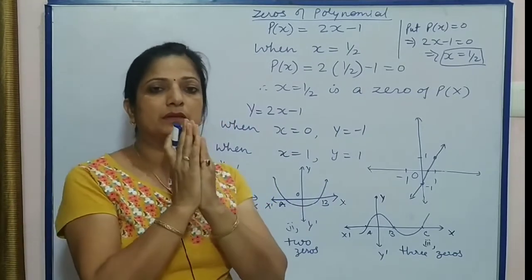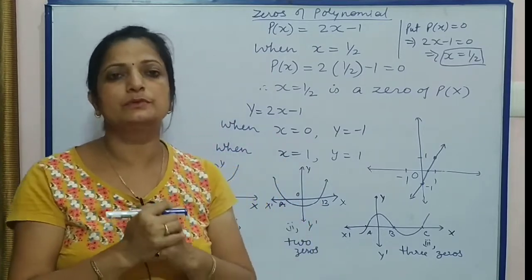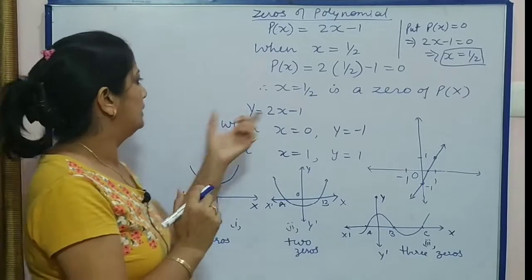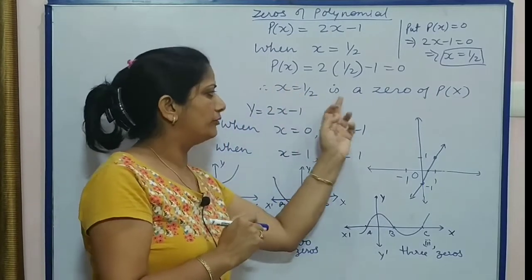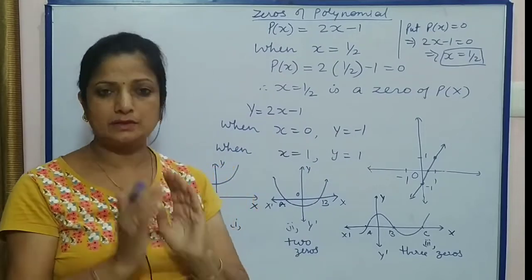That means that value of x when we put in P(x), we will get value zero. So x = 1/2 is a zero of this polynomial 2x - 1.